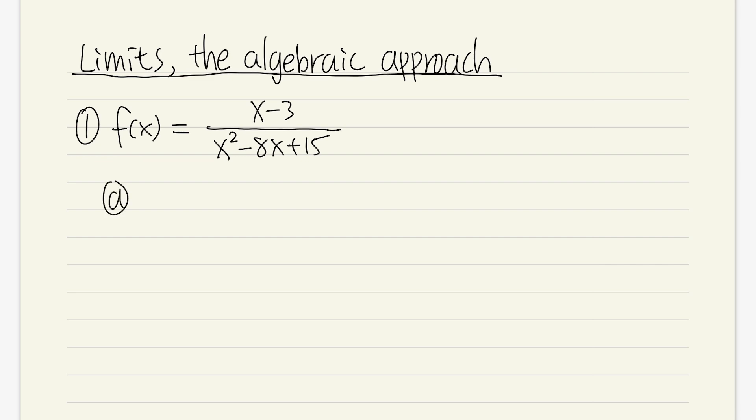If this is equal to x minus 3 over x squared minus 8x plus 15. Let's take a look. First, let's talk about what if we want to do f of 3. Well, it means that x is exactly equal to 3.